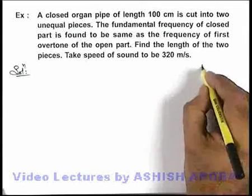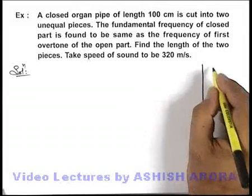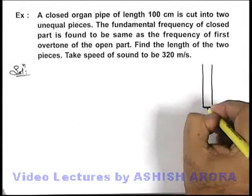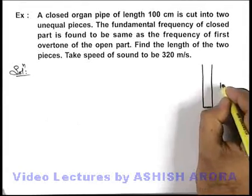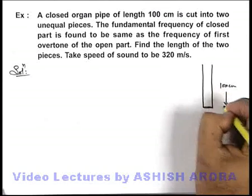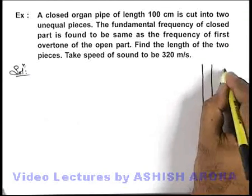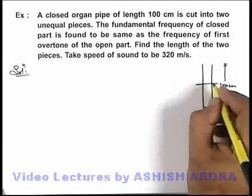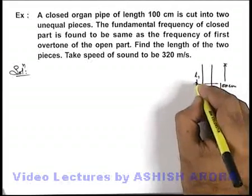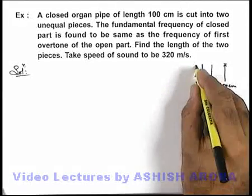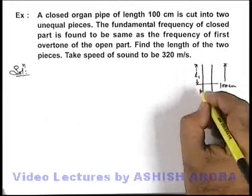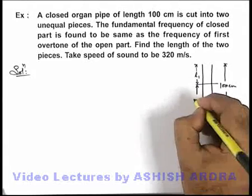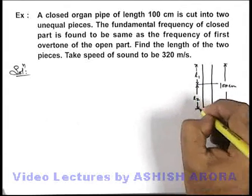In this situation, we are given a closed organ pipe of length 100 centimeters, and it is cut into two parts. The open part is having a length l1, and the closed part is having a length l2.